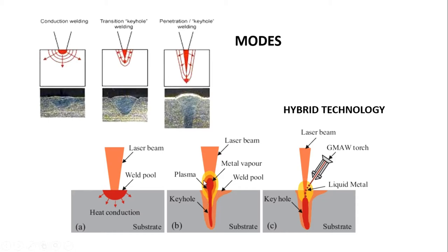Another mode is a GMAW torch coupled with the laser beam, making a hybrid technology. This laser beam can be easily merged with GTAW, GMAW, plasma, and other arc welding processes. This hybrid technology provides maximum heat and maximum performance.